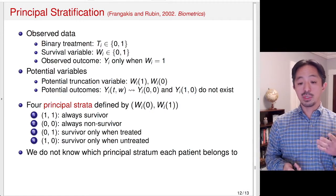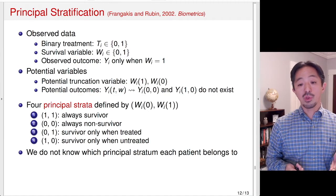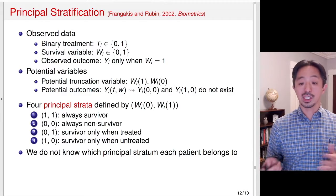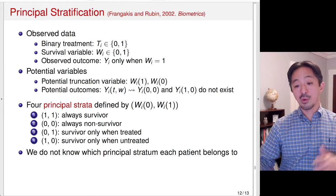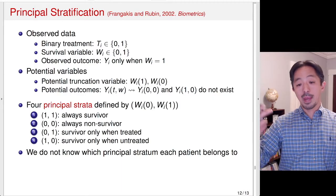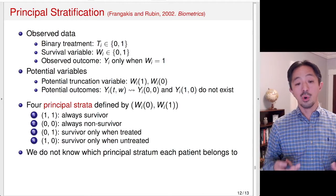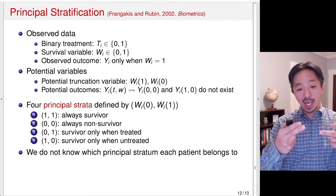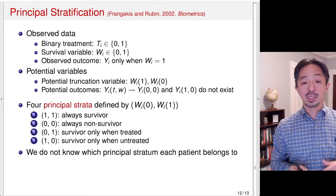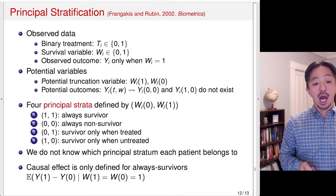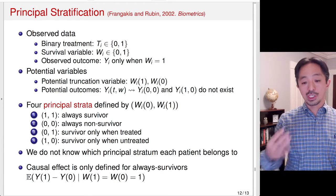We do not know which principal stratum each patient belongs to. The reason is that we don't observe W(0) and W(1) at the same time for any given patient. If the patient is treated, we observe W(1) but not W(0). If the patient is not treated, we observe W(0) but not W(1). As a result, we can eliminate two of the four types for some patients, but we don't know which stratum each patient belongs to. However, we can still define the causal effect and discuss how to estimate it with certain assumptions — we'll discuss that later in the course.